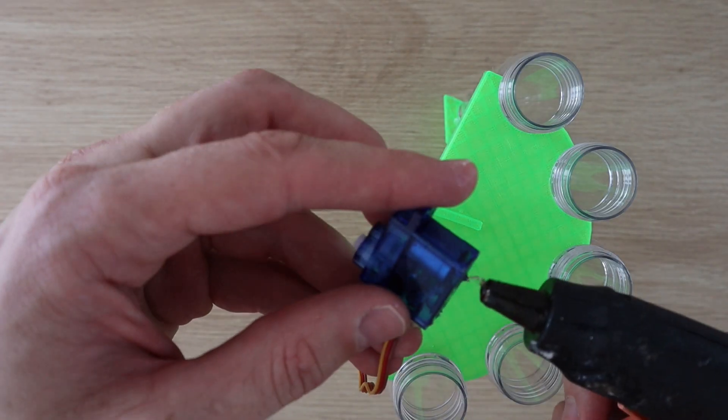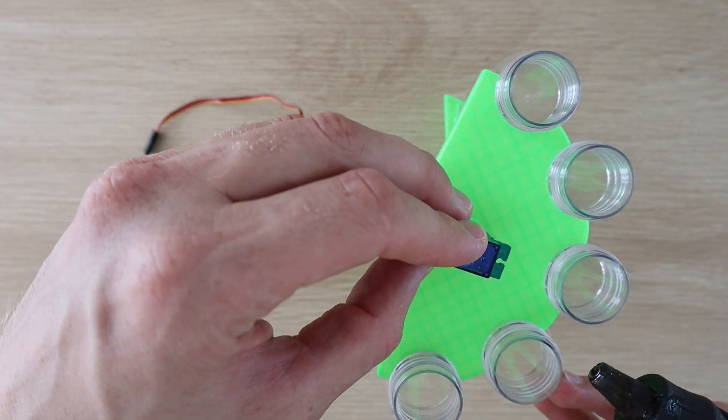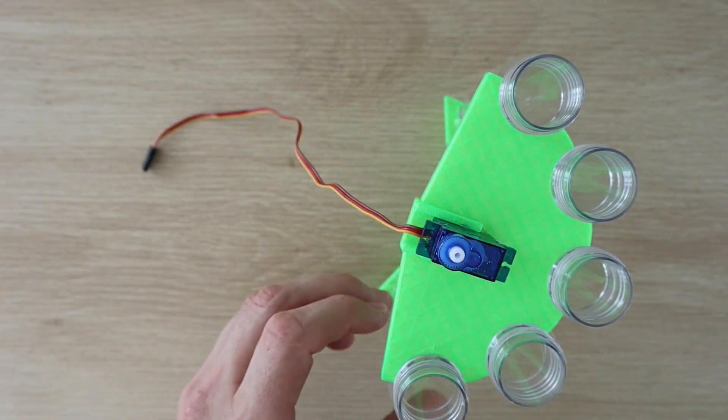Two servos are used in the sorter, one to feed a skittle to the colour sensor and one to position the sorting chute to the correct tube.